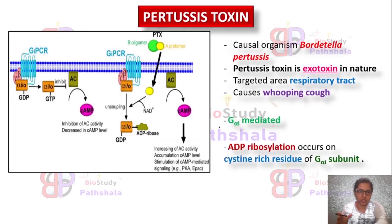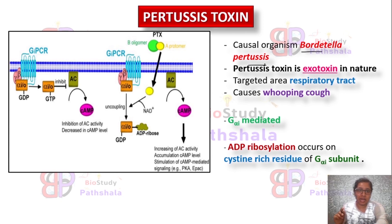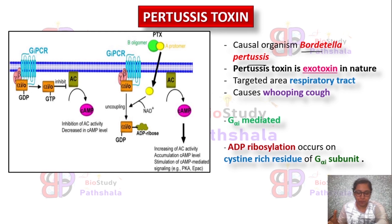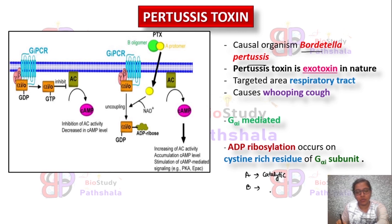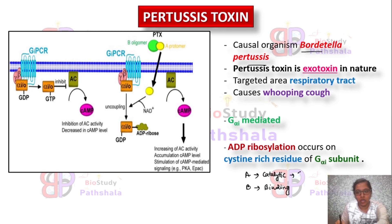So what is Pertussis toxin? It is an exotoxin in nature and it is secreted by Bordetella pertussis. This toxin is multimeric in nature, meaning more than two monomers. Those units are the A subunit and B subunit. The A subunit shows catalytic activity while the B subunit shows the binding effect.